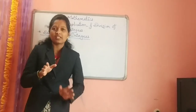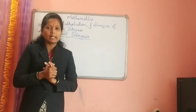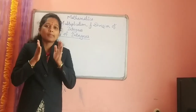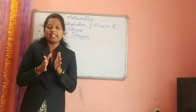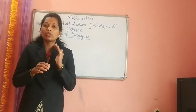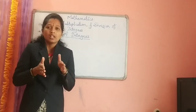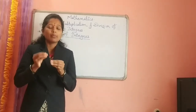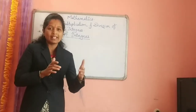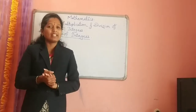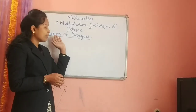Let's recall the multiplication of integers. When both numbers are positive, the answer is also positive. When one number is negative and the other is positive, the answer is negative. And when both numbers are negative — for example, minus 9 multiplied by minus 2 — the answer becomes positive. In this way, we have seen the rules of multiplication of integers.